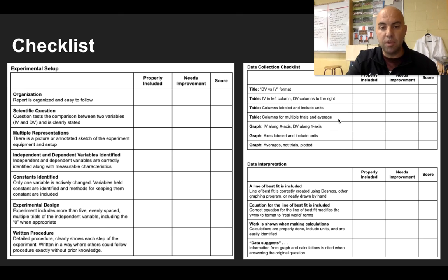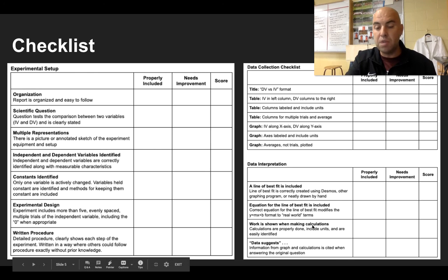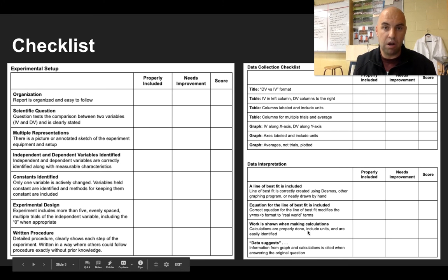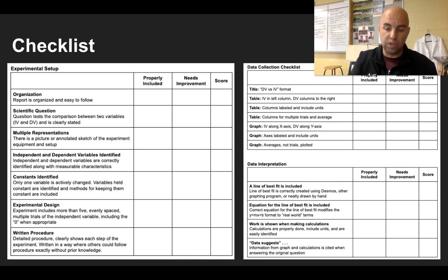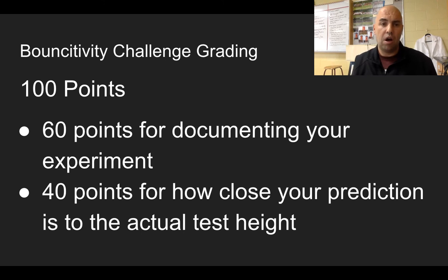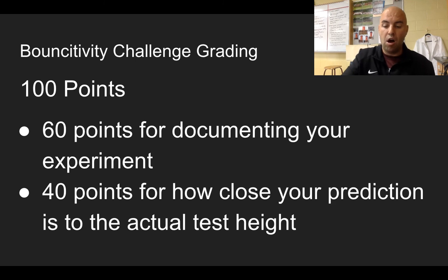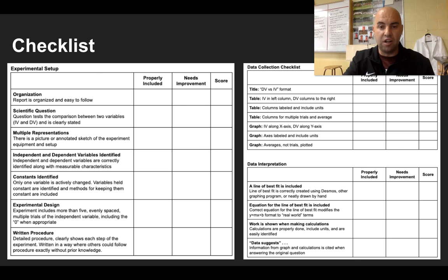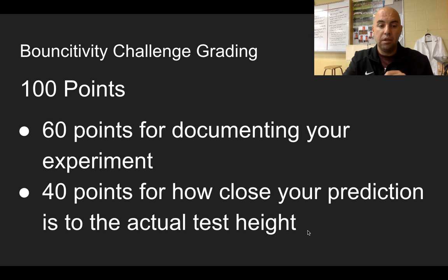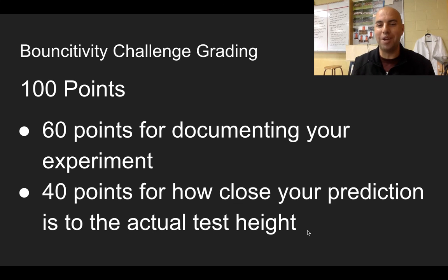Looking over here, these are some of the things I'm gonna be looking for on your data tables and graphs. When it comes to your data interpretation and being able to use that graph and the equation, these are the kinds of things I'm going to be looking for. There's a copy of that attached in Schoology. Here's how your grading's gonna be — it's gonna be 100 points total. 60 points for documenting your experiment, and you know exactly before you finish what your grade should be. 40 points for how close your prediction is to the actual test height. I'm hoping that explains it — let me know if you have any questions and I'll be happy to help you out. Talk to you soon.